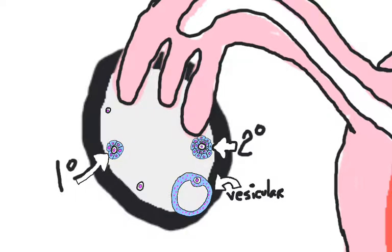These follicle cells secrete estrogen. So as we get more follicle cells, there is more estrogen being released into the bloodstream. This is the follicular phase of the ovarian cycle.